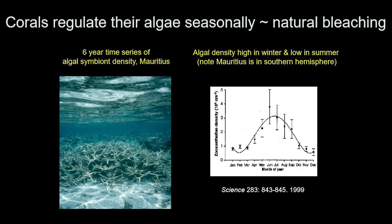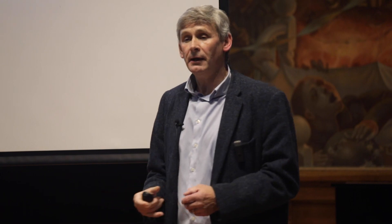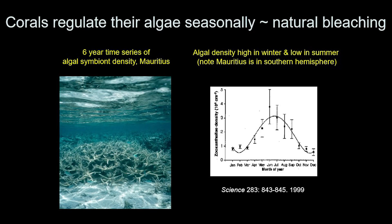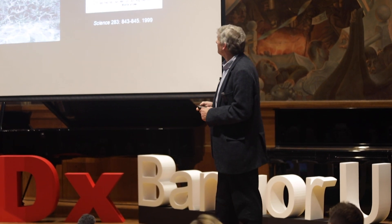Corals can regulate their algae seasonally. We did a study in Mauritius over six years, visiting the same coral every week and counting the algae within its tissue. In Mauritius — southern hemisphere — summer is in our winter. In January and February, algal numbers are very low because there's lots of light; in winter, algal numbers are very high. The coral is regulating its energy source, and this was the first time this had been clearly identified in a long-term study.